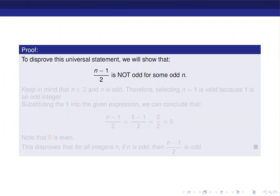To disprove the statement, we will show that n minus 1 divided by 2 is not an odd number for some random number that is odd. Keep in mind that n is an integer and n is odd, so therefore selecting n equal to 1 is valid because 1 is an odd integer. So not only do I pick the number randomly, I have to show that the number that I picked satisfies the requirement of the statement. The number I pick has to be an odd integer.